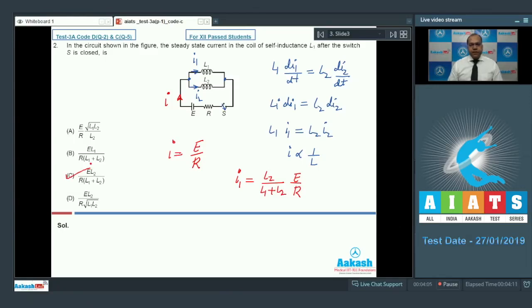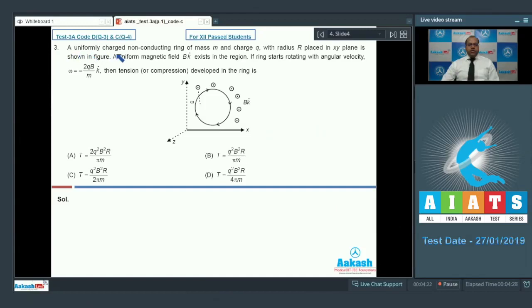Let's move to question number 3. A uniformly charged non-conducting ring of mass M and charge Q with radius R placed in XY plane is shown in figure. A uniform magnetic field B K cap exists in the region. If ring starts rotating with angular velocity ω equal to minus 2QB by M K cap, then tension or compression developed in the ring is. So if I consider a small segment on this ring. Let I have considered this element. And this element sustained an angle 2Δθ at the center. Then this angle is Δθ as well as this angle is Δθ.